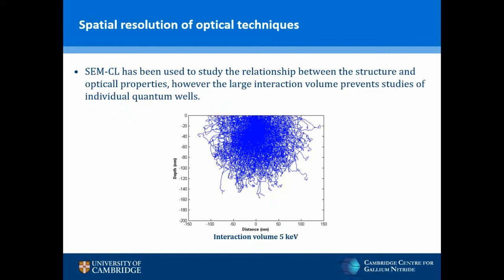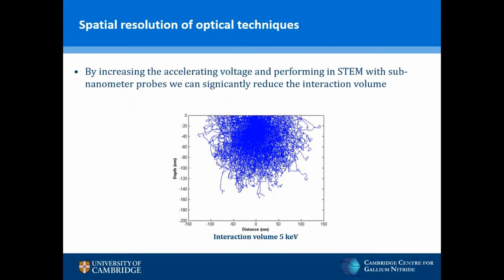Whilst common optical characterization techniques such as photoluminescence and electroluminescence provide a wealth of information, they lack the spatial resolution to resolve individual nanostructures. Cathodoluminescence in a scanning electron microscope has been widely used with great success, yet the spatial resolution in SEM-CL is inhibited by the larger interaction volume. By operating at higher accelerating voltages with electron-transparent samples, the interaction volume may be substantially suppressed, improving spatial resolution. Operating in STEM also offers the opportunity to record bright field and annular dark field signals, as well as the electron energy loss spectrum, providing information simultaneously with the optical properties.